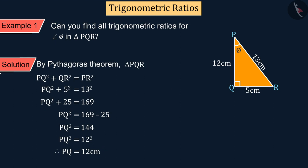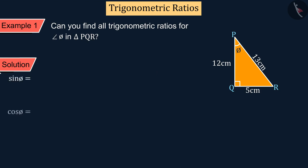Now, we can find the trigonometric ratios for phi. Can you tell me what those ratios are? Well done! These are sin, cos, tan, cosec, sec, and cot.